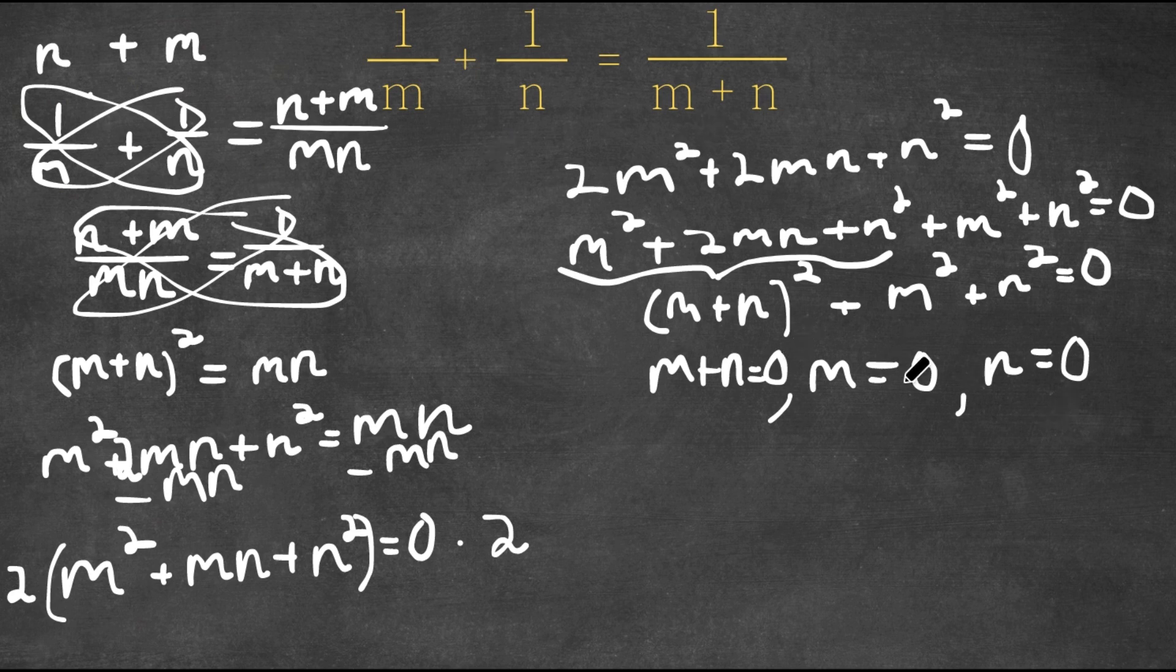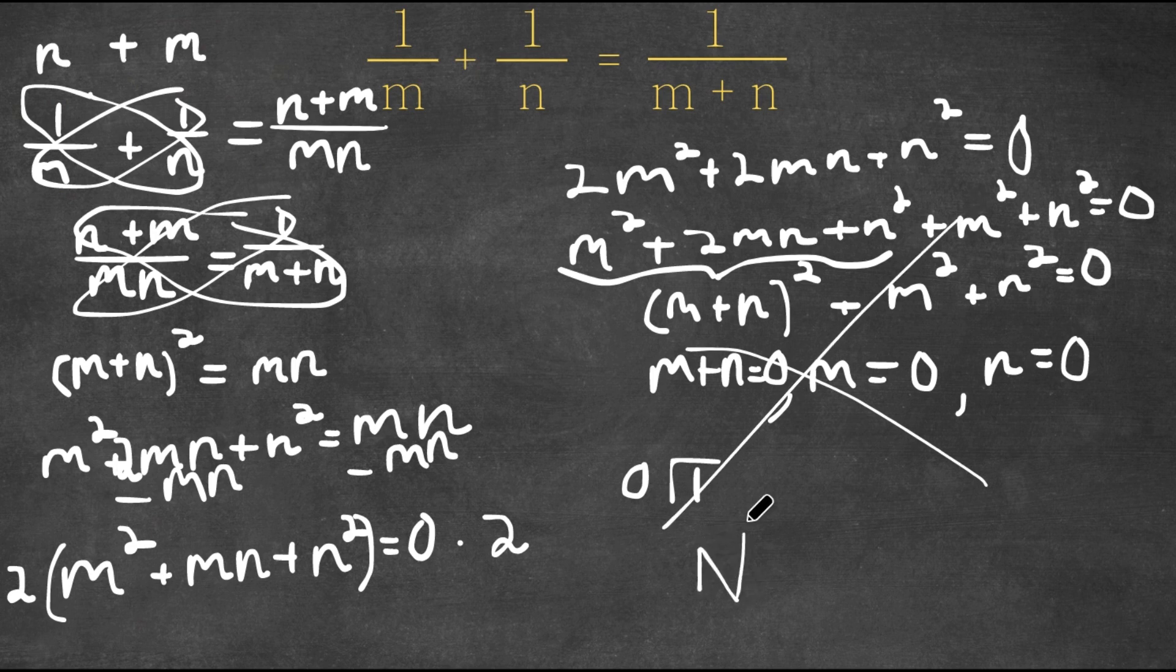However, if we plug in 0 in this equation, we would have 1 over 0 plus 1 over 0. And you actually can't divide by 0 because if you try to divide by 0, you can't multiply anything with 0 to get 1. So this actually means that there is no solution.